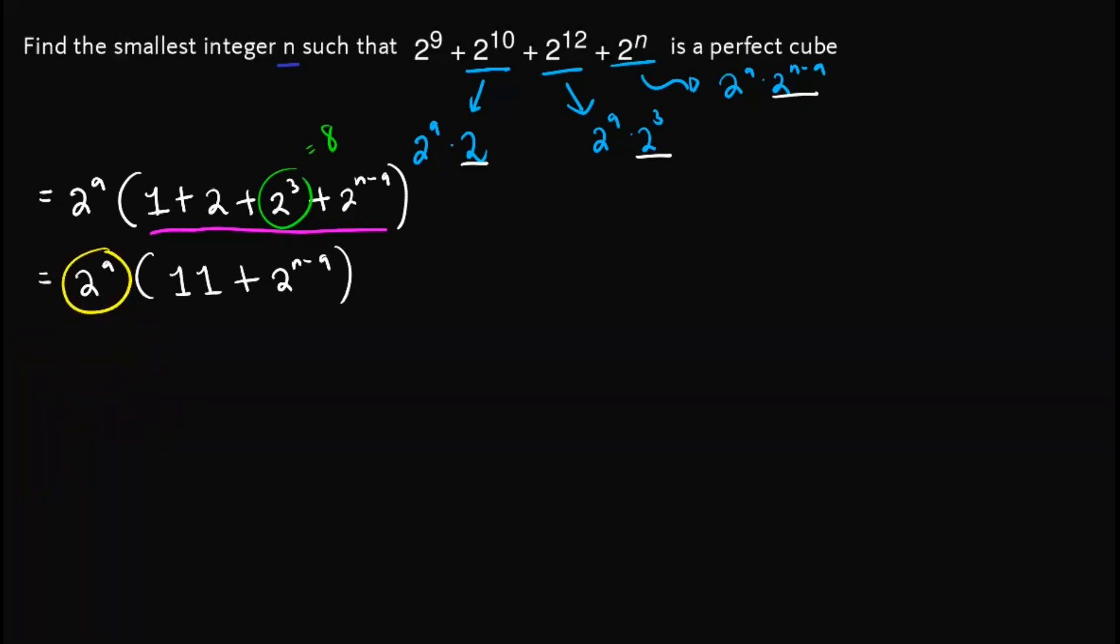So our only concern is to make this one out here a perfect cube. So to do that, we first let x equal n minus 9. Then we will have 11 + 2^x. So again, our goal is to make this one a perfect cube.